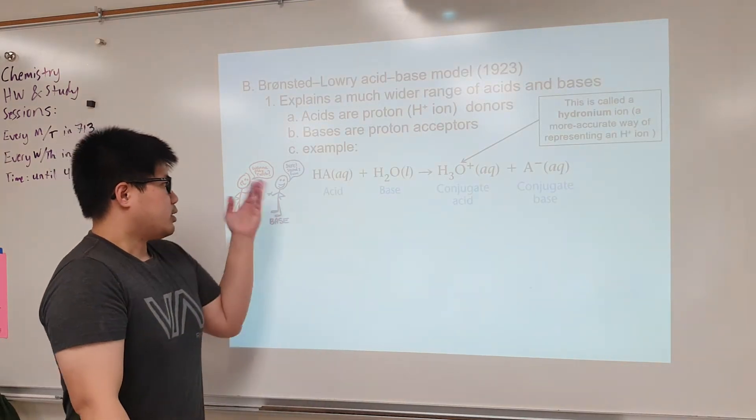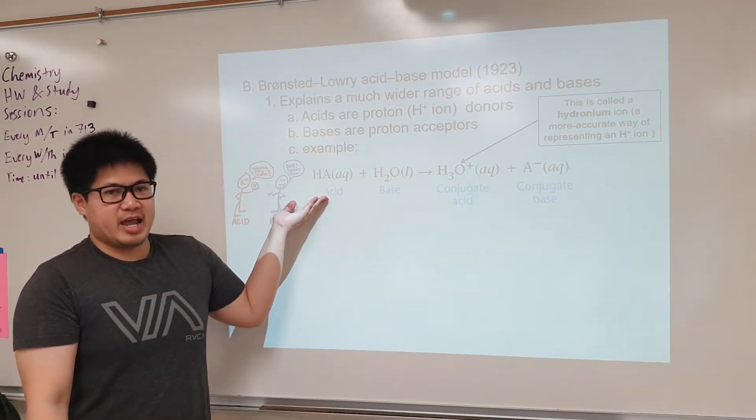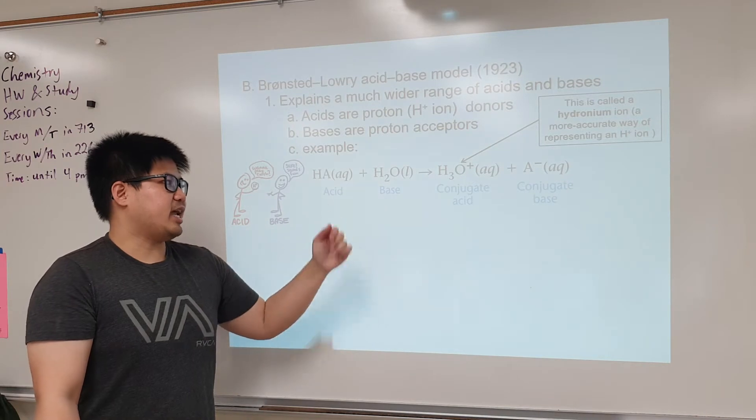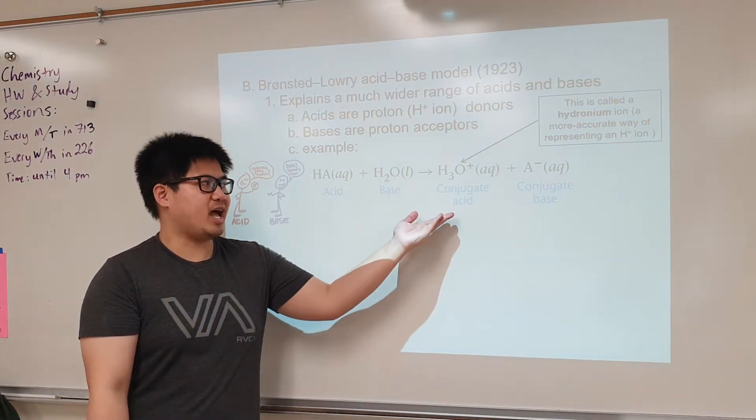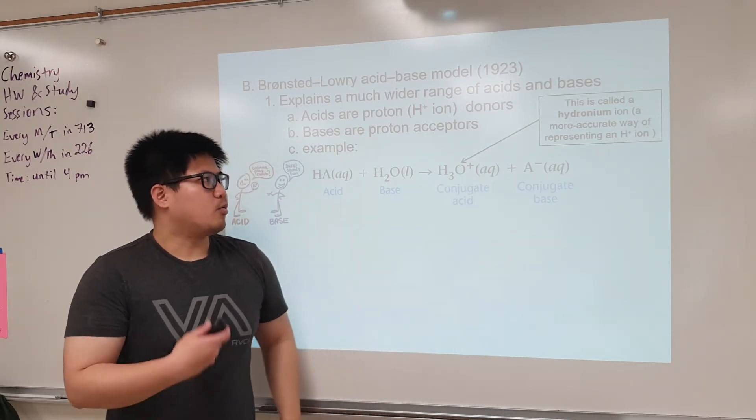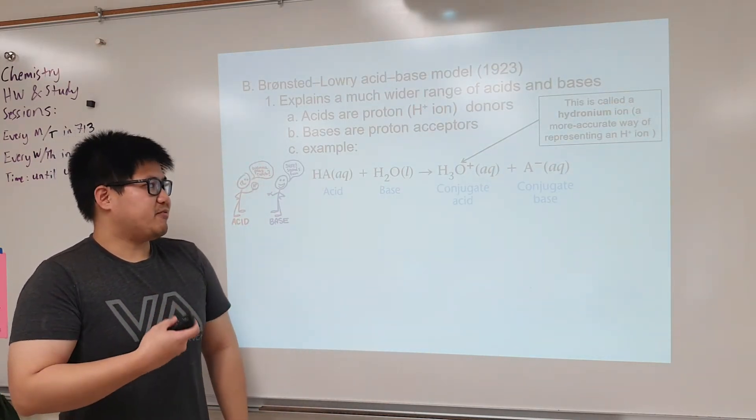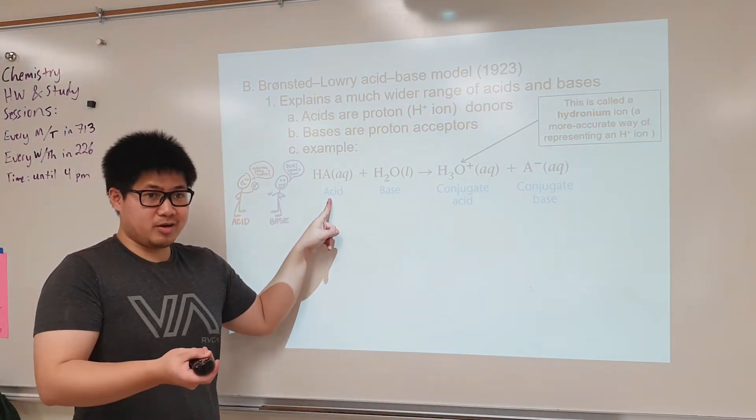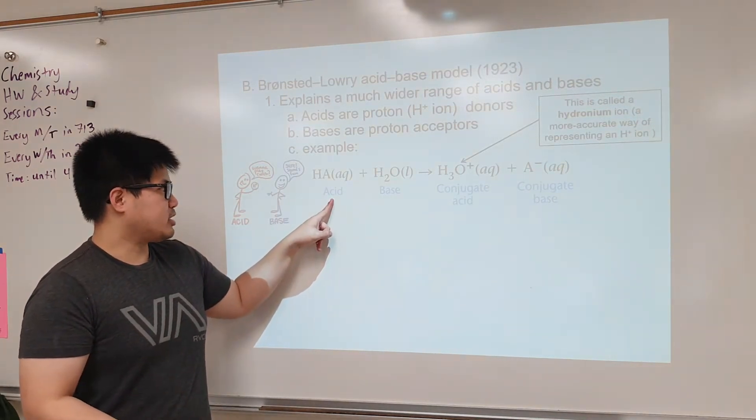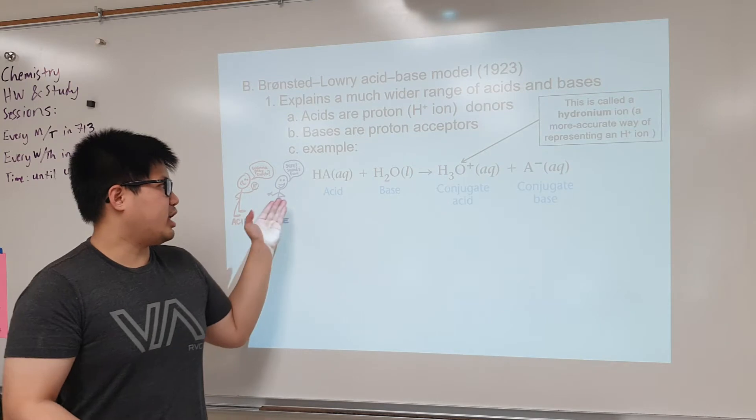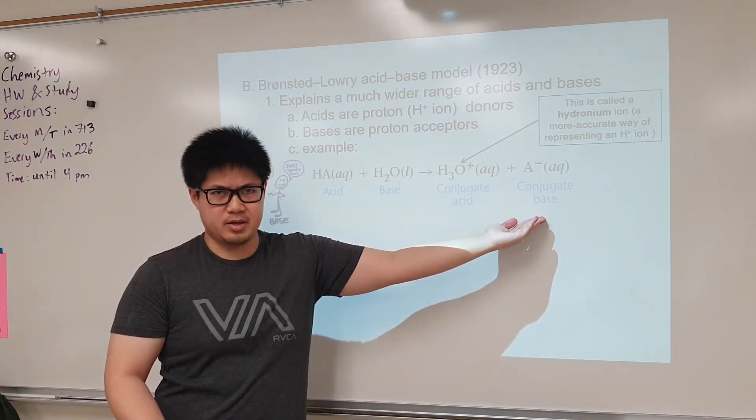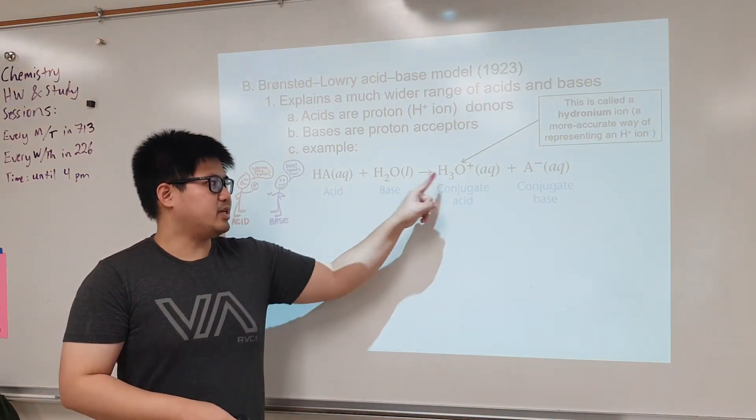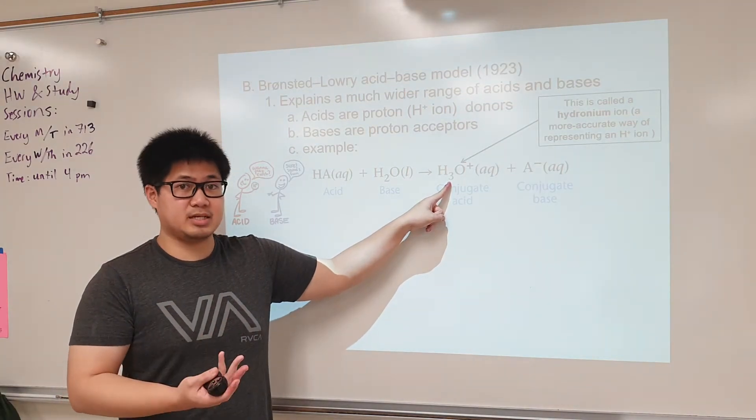Here's an example. This is a general equation of an acid, and this is the base. When we add this acid and base together, we create a conjugate acid and conjugate base. What happened? By definition, if this is an acid, it should donate a proton. Looking at HA, after we just have A. Where did the H go? It went into the base.